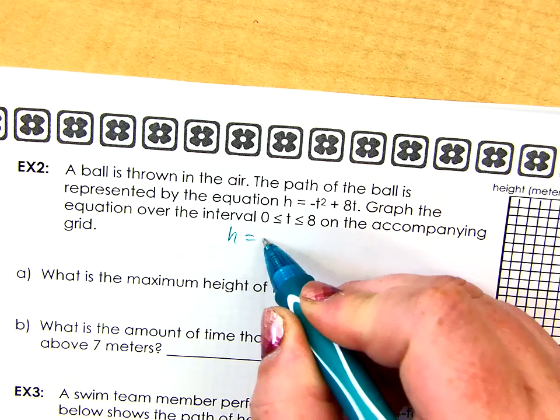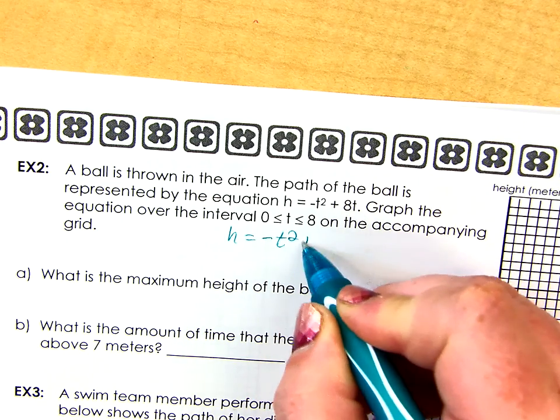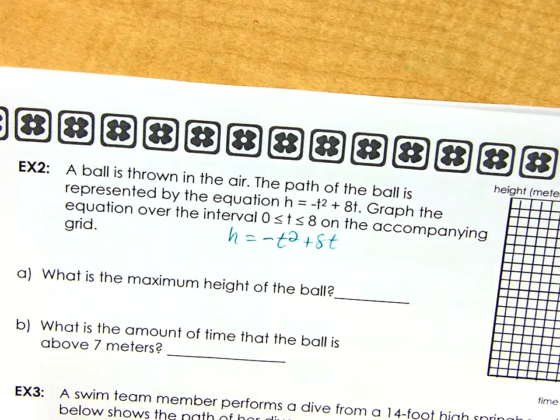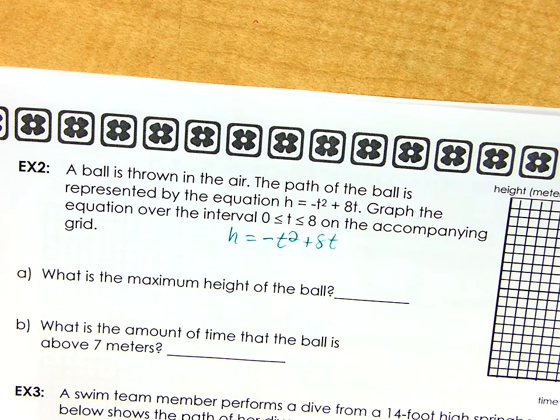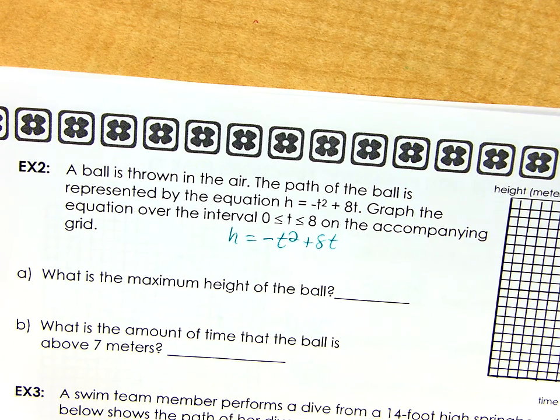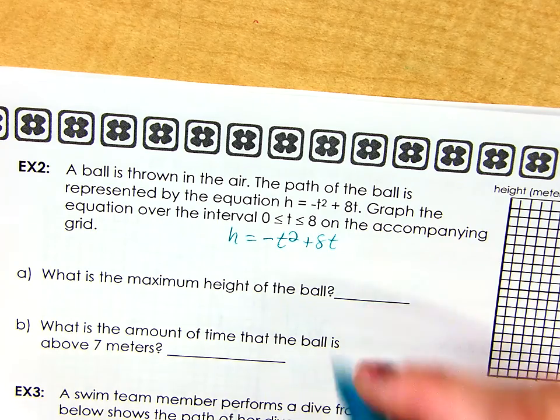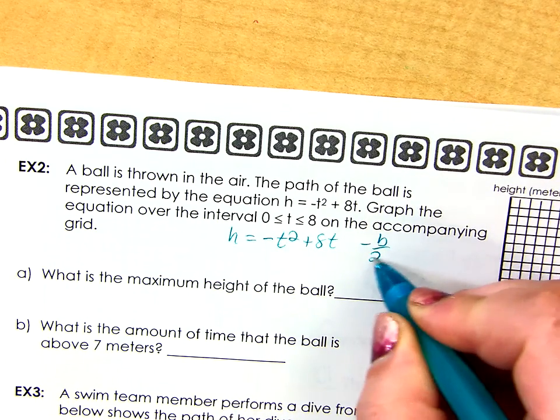So H, I'm just going to rewrite it down here. Negative T squared plus 8T. How do I find the vertex of a parabola? Don't you do negative B over 2A? Negative B over 2A. Exactly. Negative B over 2A.